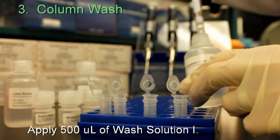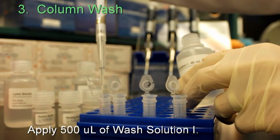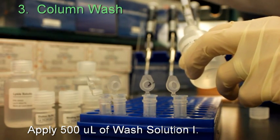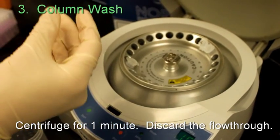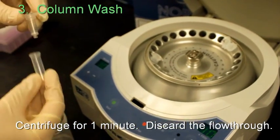Apply 500 microliters of WASH-1 solution to each column. Centrifuge for 1 minute and discard the flow-through.